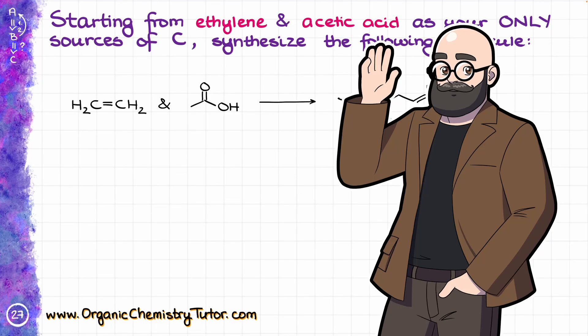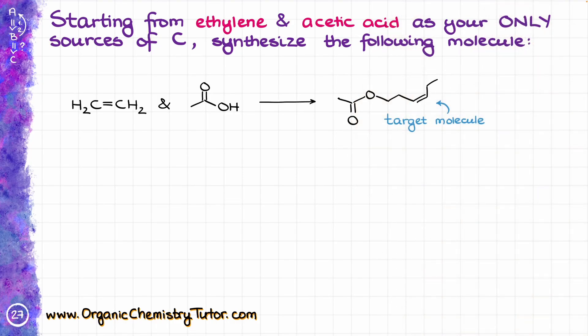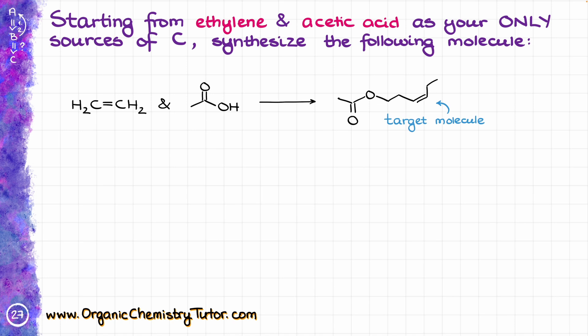Hello everyone, Victor is here, your organic chemistry tutor, and today I want to work through the example where we are going to start with two seemingly straightforward and simple molecules — we have ethylene and we have acetic acid — and we are going to form quite a monstrosity on the right, using our two molecules as the only sources of carbon in our final products. This synthesis looks quite a handful, so let's try to break down our target molecule into the building blocks and see how we can stitch it together from different bits and pieces.